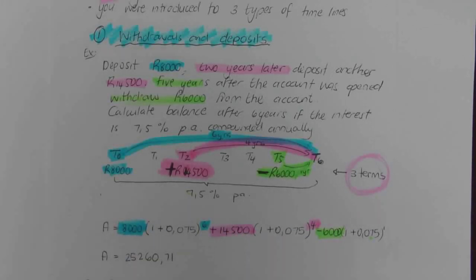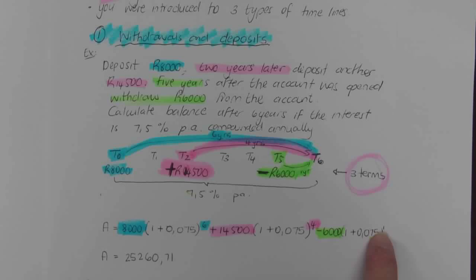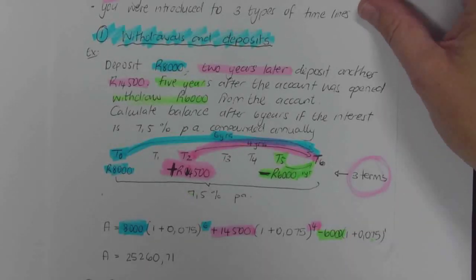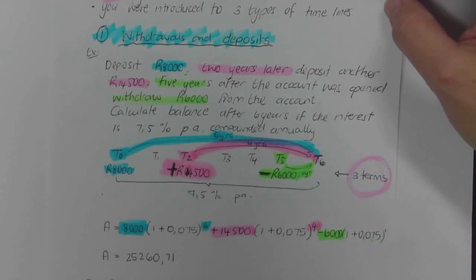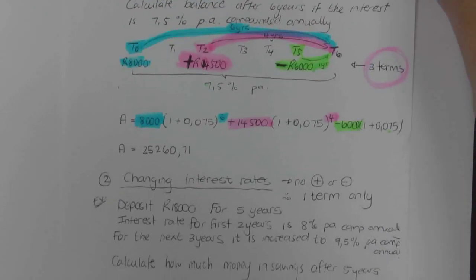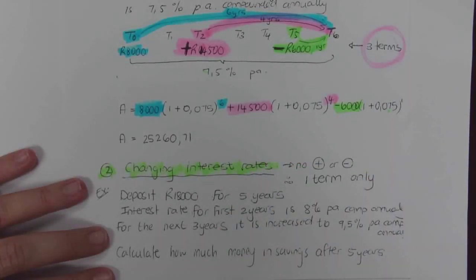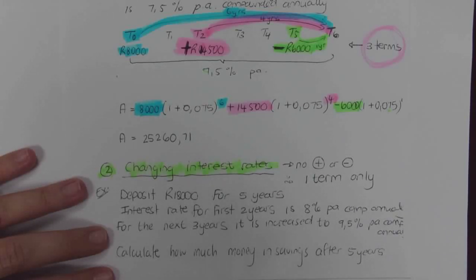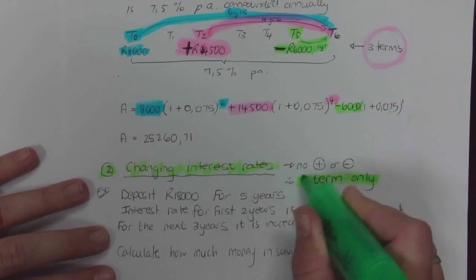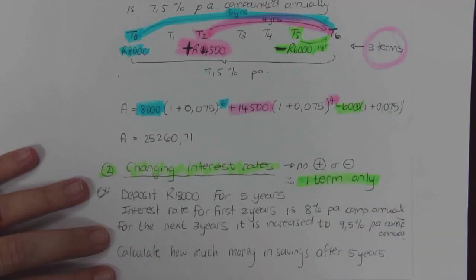That was the first type of timelines you did in Grade 10. The second type you had to work with was changing interest rates. With changing interest rates, I have one deposit — no withdrawals, no further deposits. I work with one term only, because a deposit and a withdrawal make my terms up. So there are no plus or minuses — that's one term only.